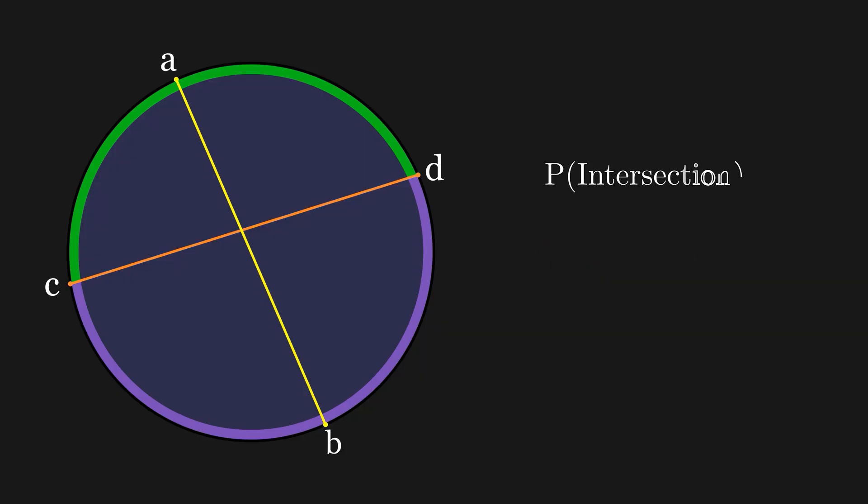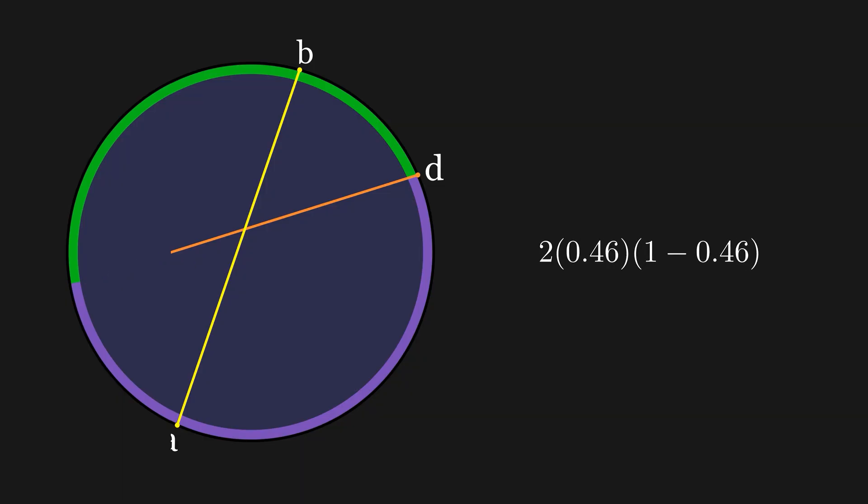So the probability the chords intersect is the probability that A lies in green and B in purple, plus the probability that A lies in purple and B in green. This simplifies to 2S times 1 minus S. The problem is, this value will change depending on S, which can range from 0 to 1. So how do we account for this?